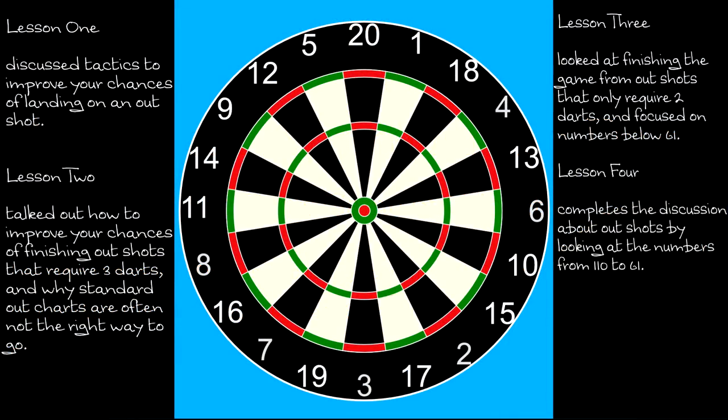In the first four videos in this series, I covered tactics for winning at 0-1 games such as 5-0-1 and 3-0-1. In an 0-1 game, everyone's strategy is basically the same: score big to get to an outshot as quickly as possible and then finish the game on a double. Tactics are the decisions you make about what to throw each dart at. As you will have seen if you watched my earlier videos, the decision making process is fairly straightforward for 0-1 games.